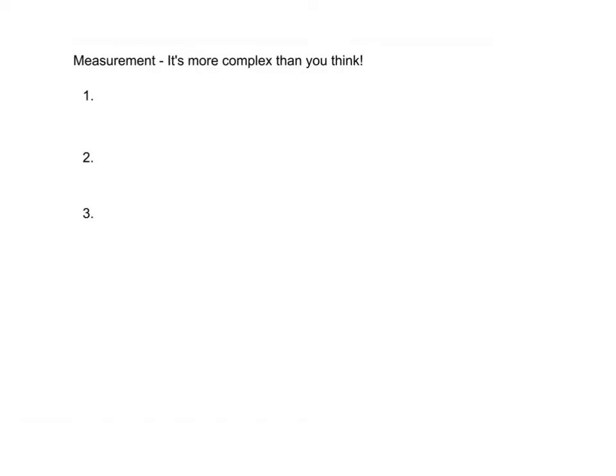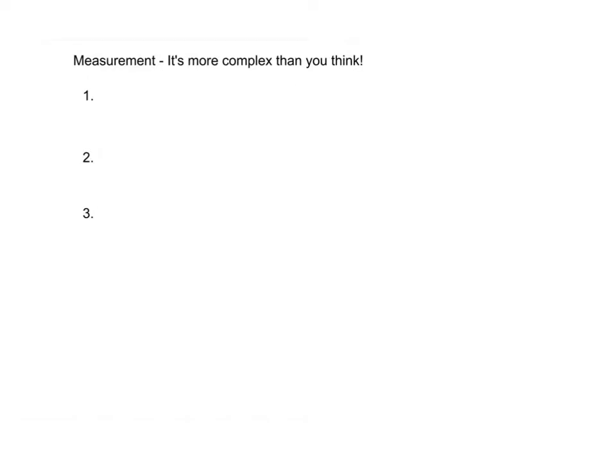First of all, when you have an instrument in your hand, you need to know what the instrument measures, you need to know what the scale is, and you need to know what each line represents. You wouldn't use a graduated cylinder to measure the length of something, just like you wouldn't use a thermometer to measure volume. So pick the right instrument, identify the units, and make sure you know what each line of that instrument is representing.